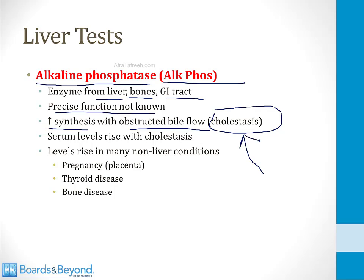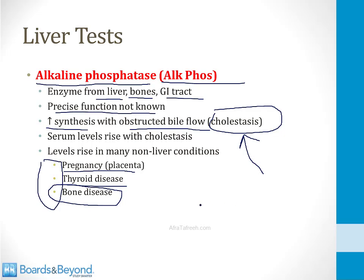Importantly, you should be aware that the Alkphos level can also rise in many non-liver conditions. Alkphos can come from the placenta in pregnancy, the level can go up in thyroid disease, and very importantly, it can be elevated in bone disease. So if you suspect one of these other conditions, you have to be cautious in determining whether the alkaline phosphatase level is due to obstruction of bile flow.